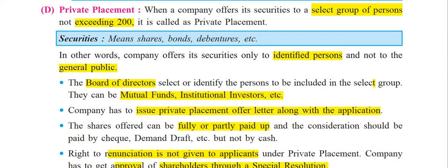Private placement: when a company offers its securities to a selected group of persons not exceeding 200, it is called private placement. It is very clear that when the company offers its securities to a selected group of persons not exceeding 200, it is called private placement. These securities include shares, bonds, debentures, etc.